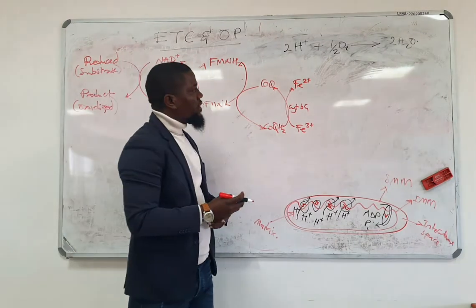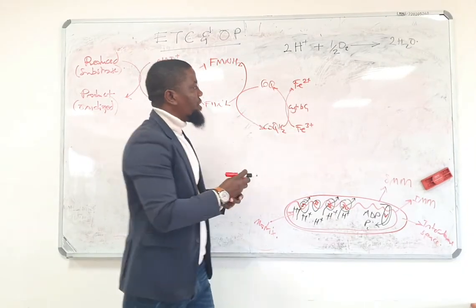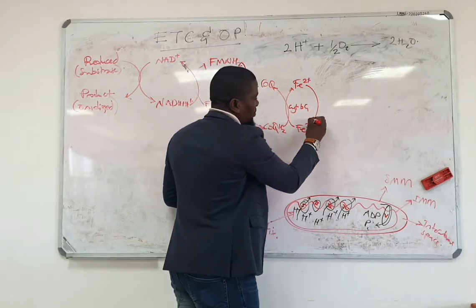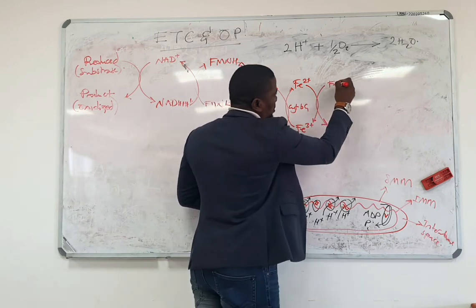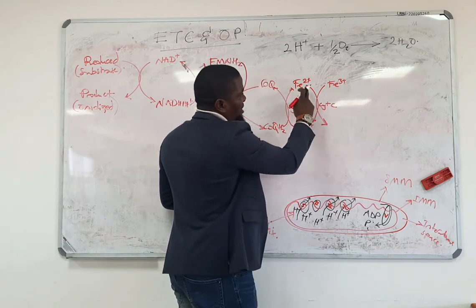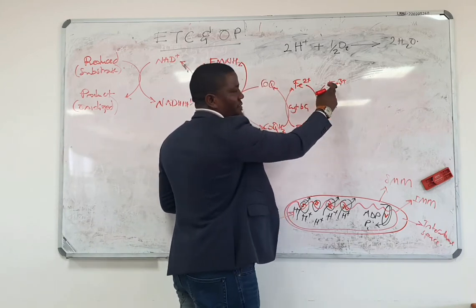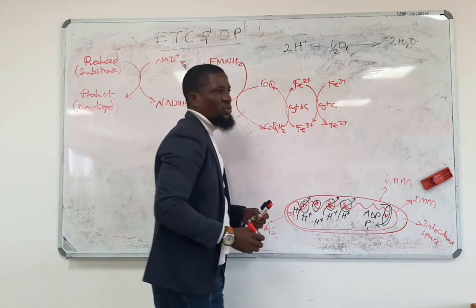The next thing that is going to happen is that the reduced iron from cytochrome reductase would actually reduce the oxidized iron of cytochrome C. The result is that this which came in as Fe3+ becomes Fe2+. It has been reduced.